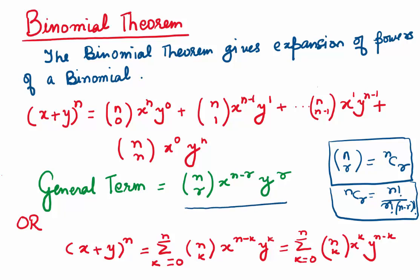When we talk of the general term, it means if you want to find what is the fourth term in the expansion, we take r as 4. This same formula in short can be written as: x plus y to the power n equals summation from k equals 0 to n of nCk times x to the power n minus k times y to the power k. Or it can also be written as summation of nCk times x to the power k times y to the power n minus k, depending on what terms we have in the binomial.